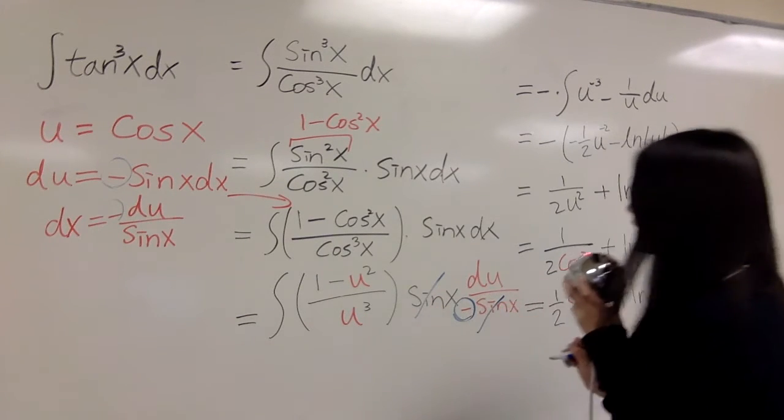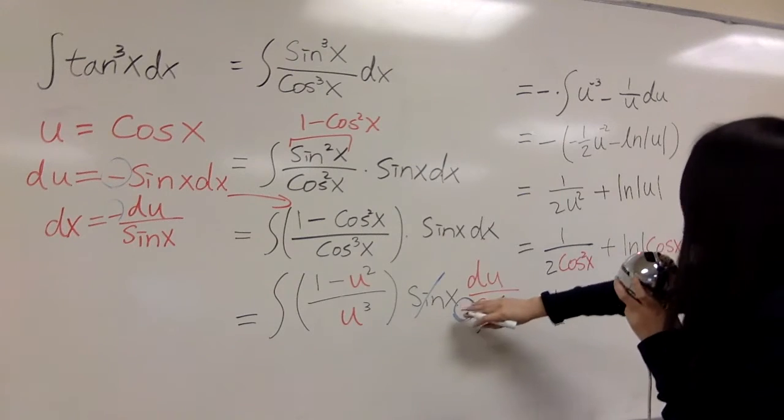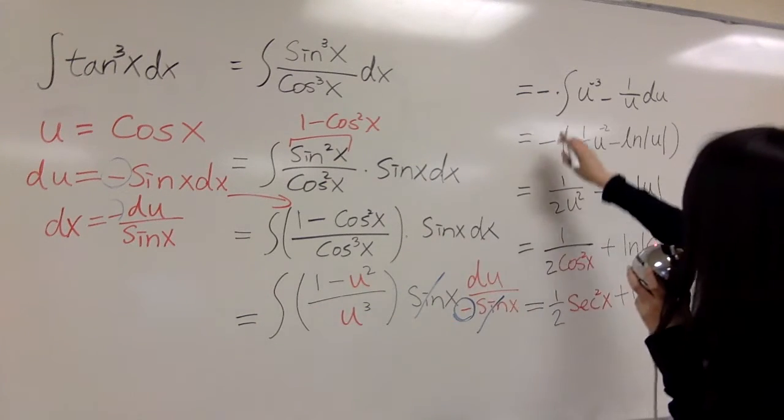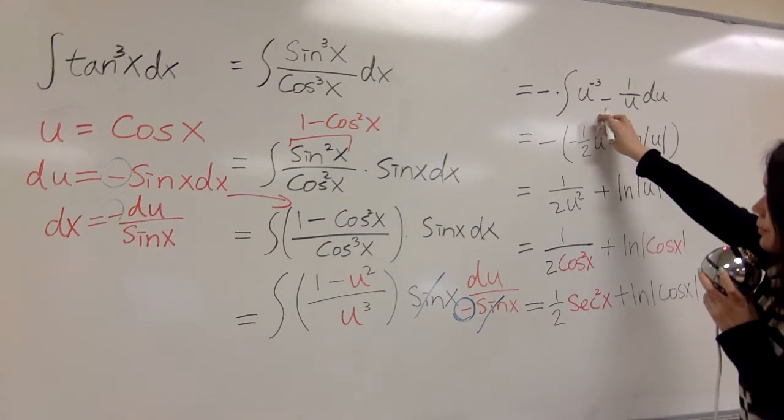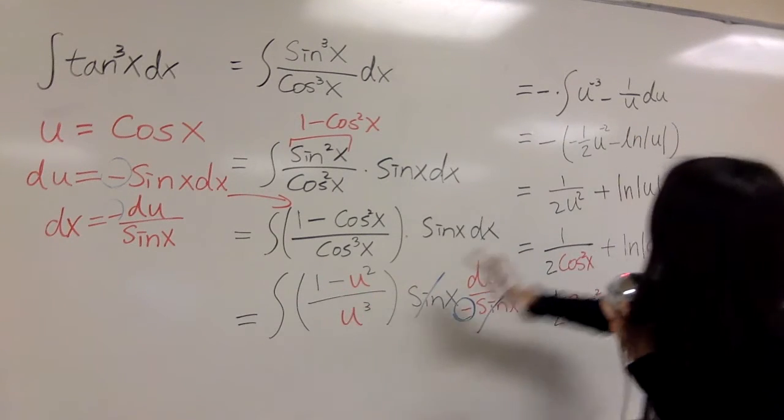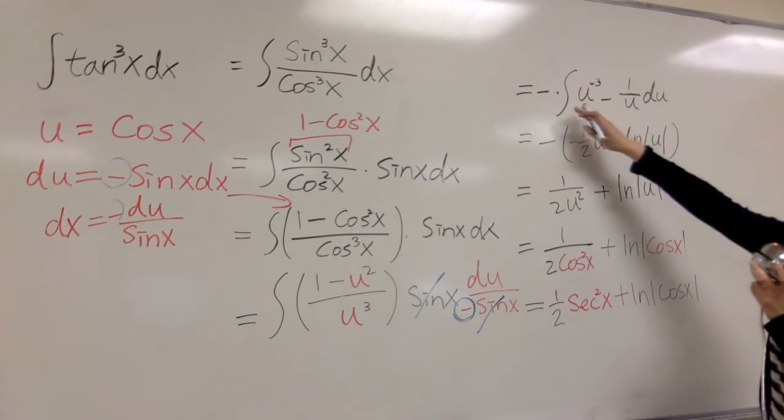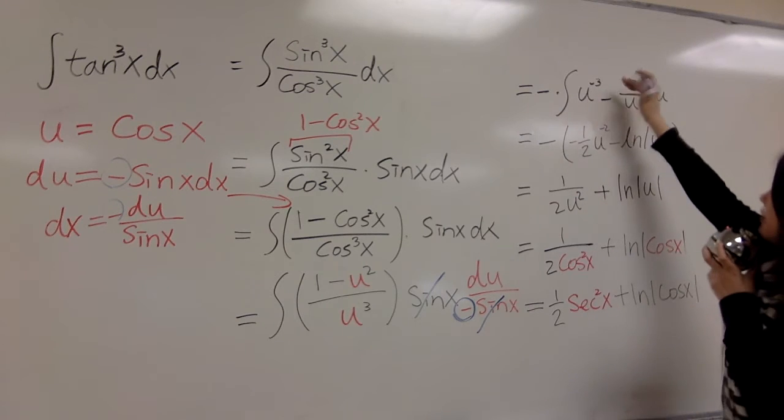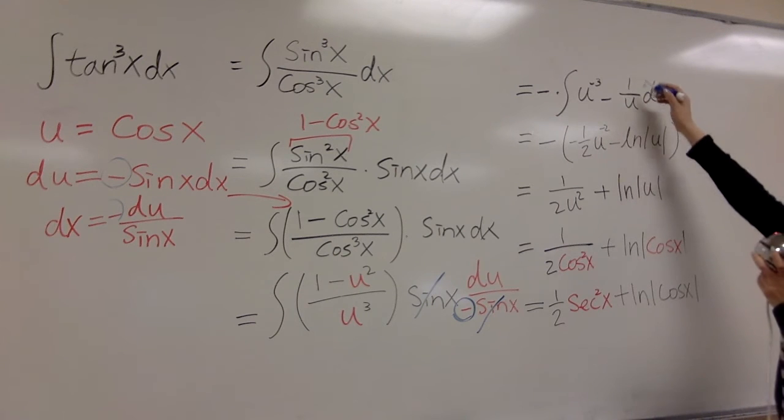And we have a negative sign, don't forget it. So we put a negative sign in the front. And you distribute them, negative integral. That will become negative integral u to the negative 3 power minus 1 over u du.